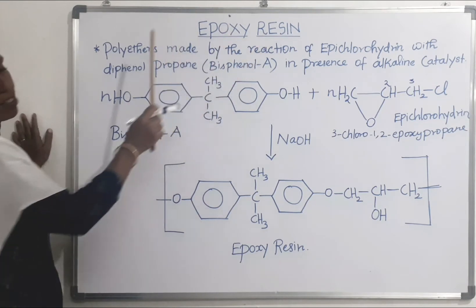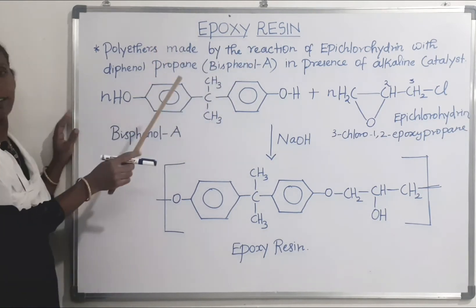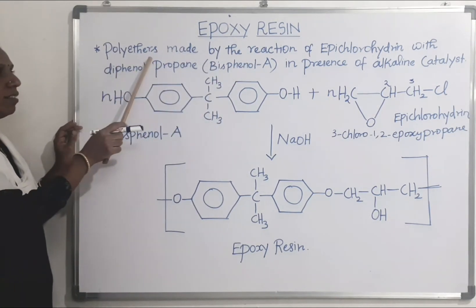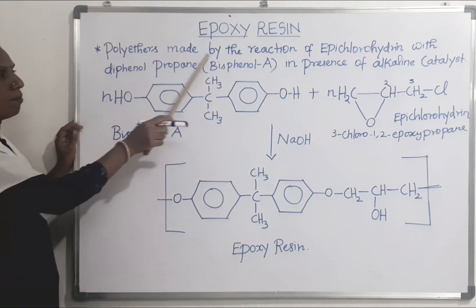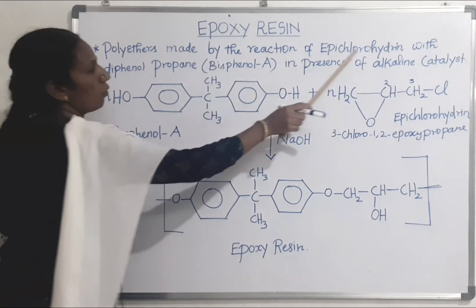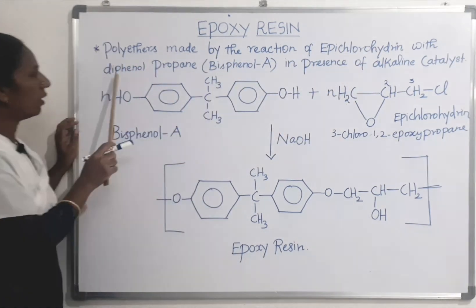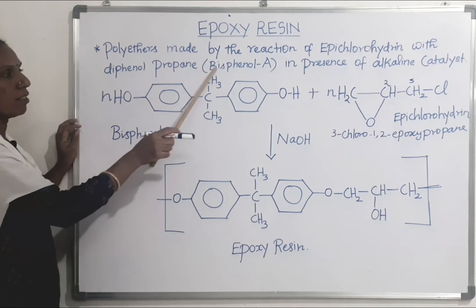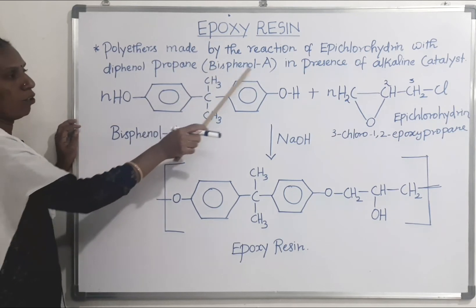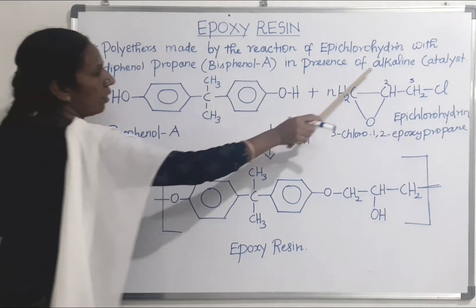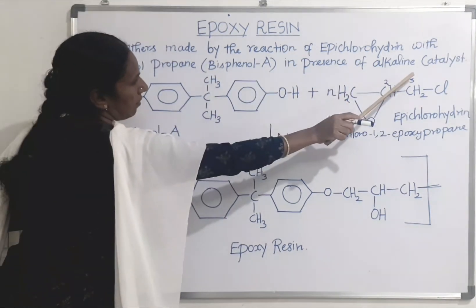What is epoxy resin? These are polyethers made by the reaction of epichlorohydrin with diphenolpropane, that is bisphenol A, in the presence of an alkaline catalyst.